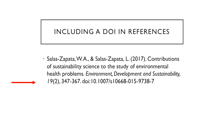Here's an example of an APA journal reference that includes a DOI. This is from the journal Environment, Development, and Sustainability — notice it's in italics and E, D, and S are all capitalized (first letter of every word). But the actual article title, 'Contributions of sustainability science to the study of environmental health problems,' only has the first letter of the very first word capitalized.